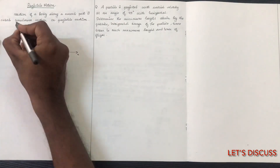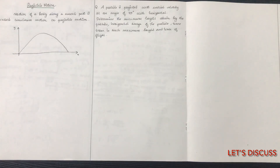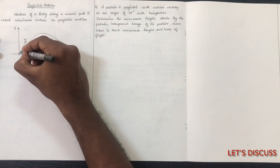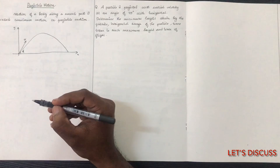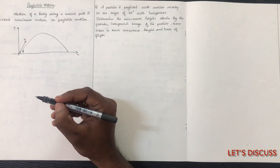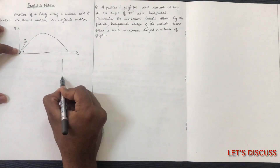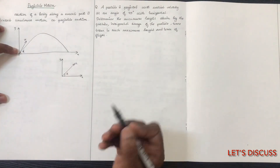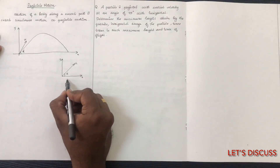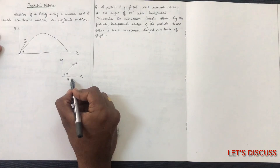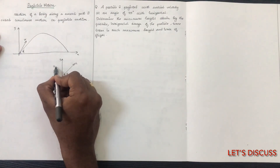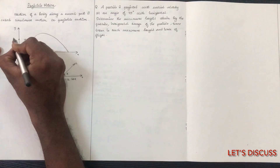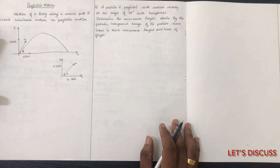We have a projection angle of alpha. If u is the velocity, it is making angle alpha with the x-axis and also with the y-axis. We have the x-component u cosine alpha and the y-component u sine alpha.